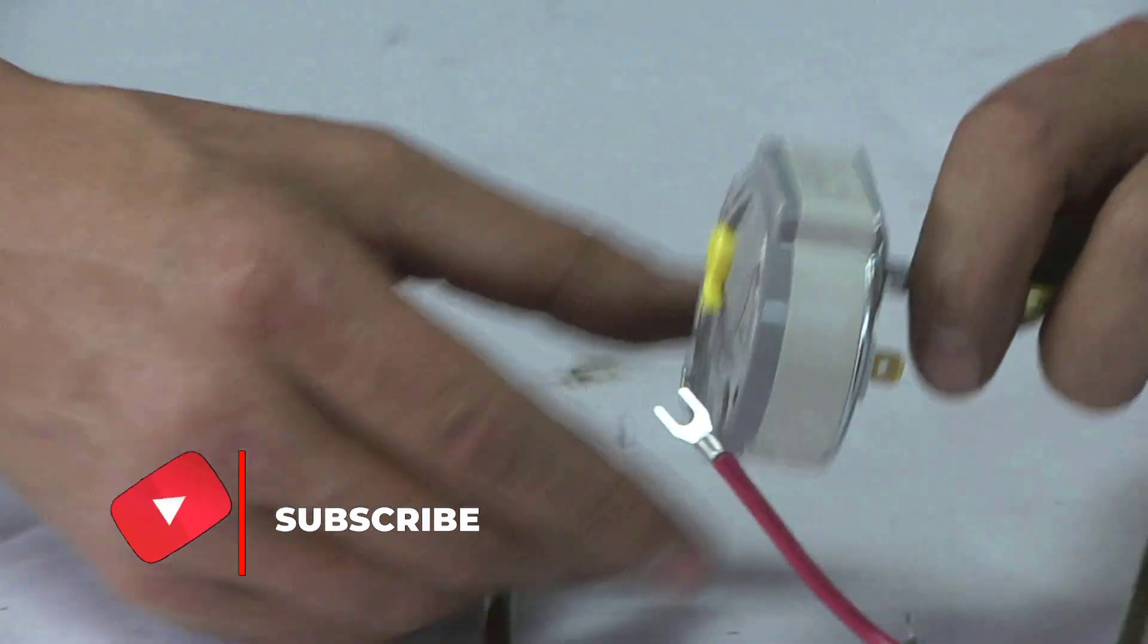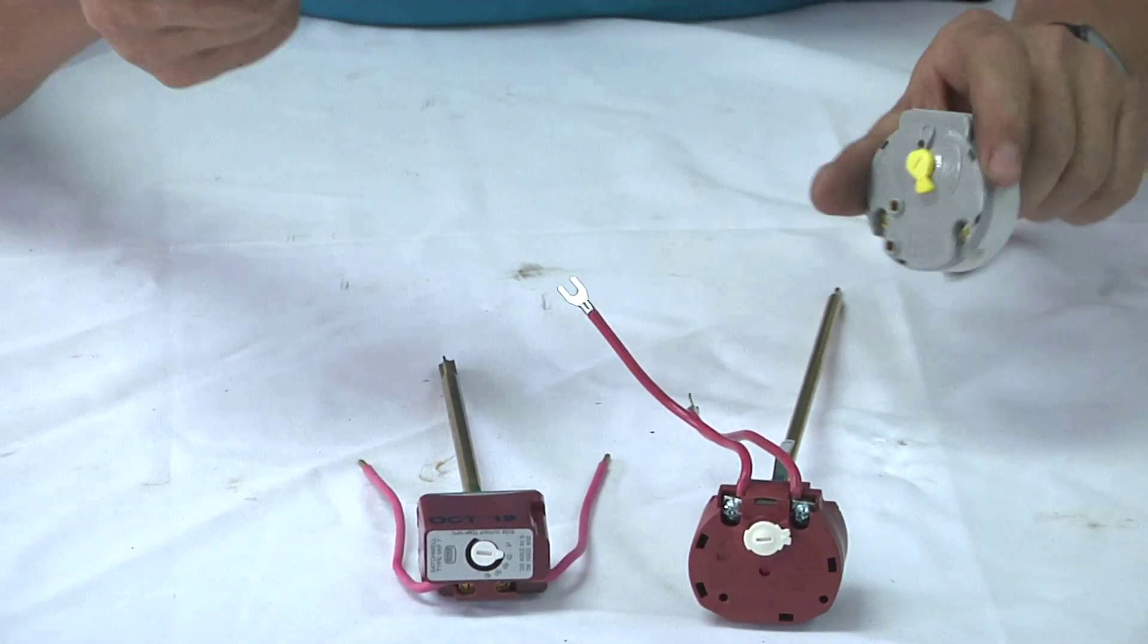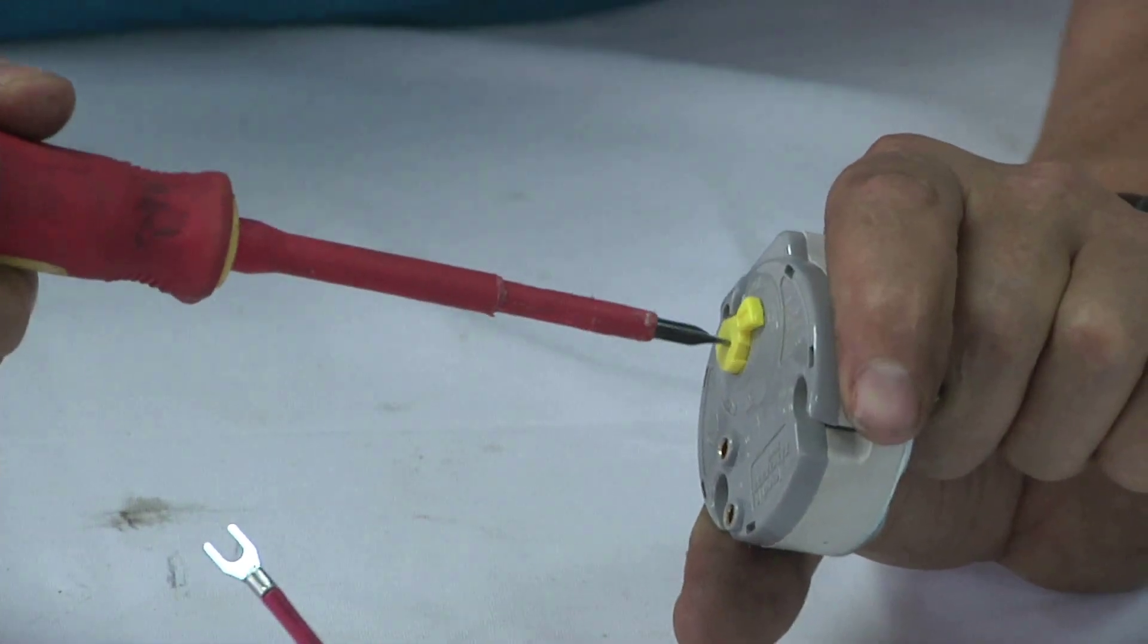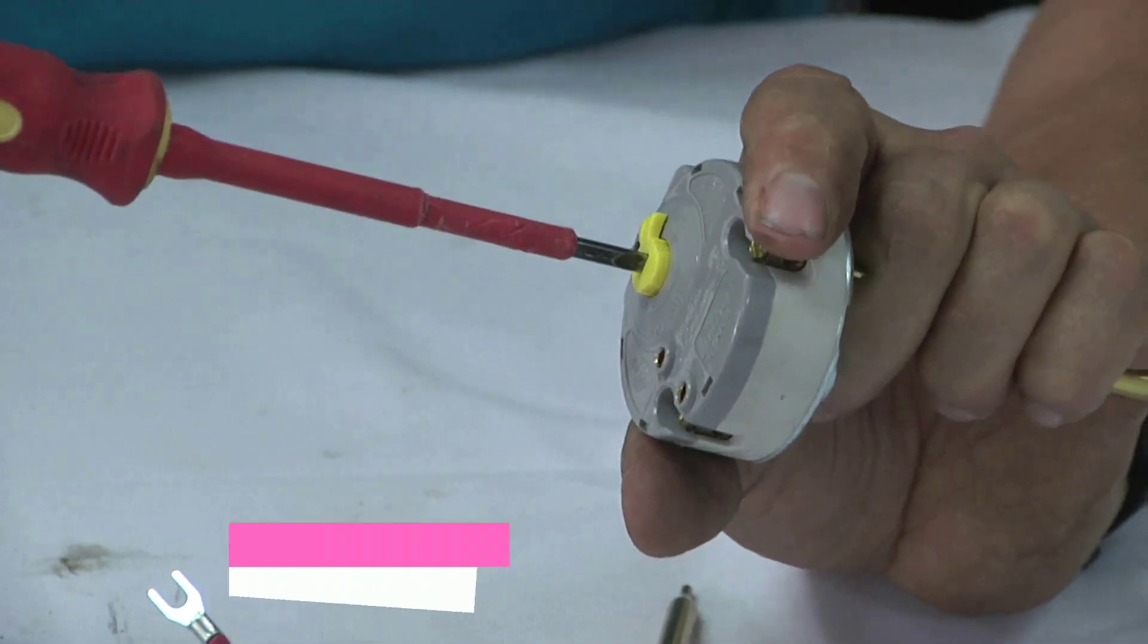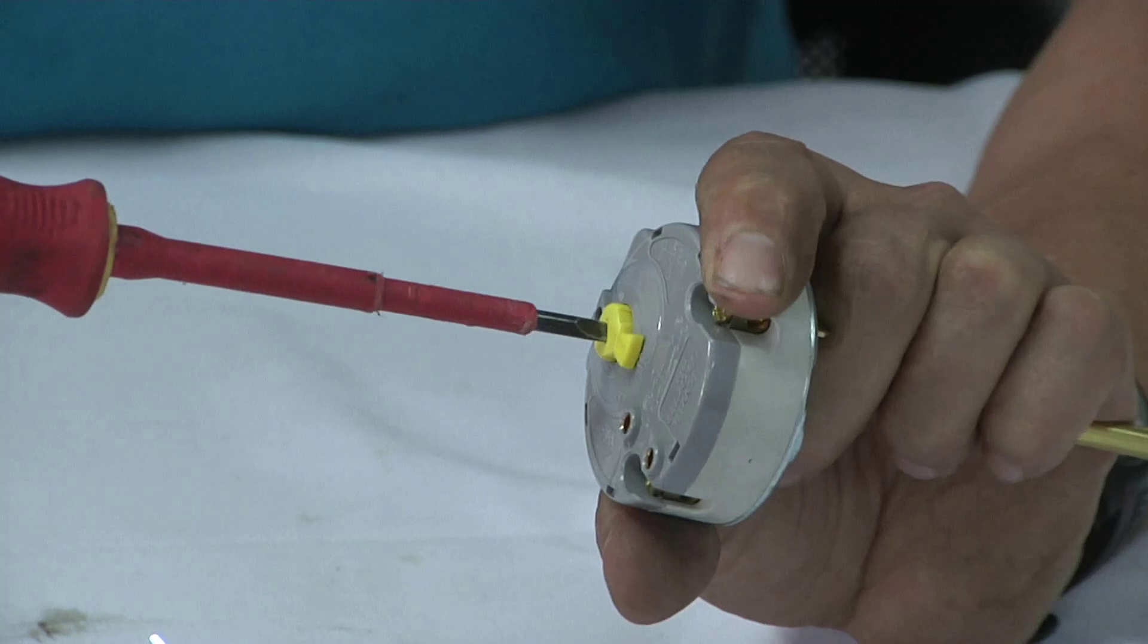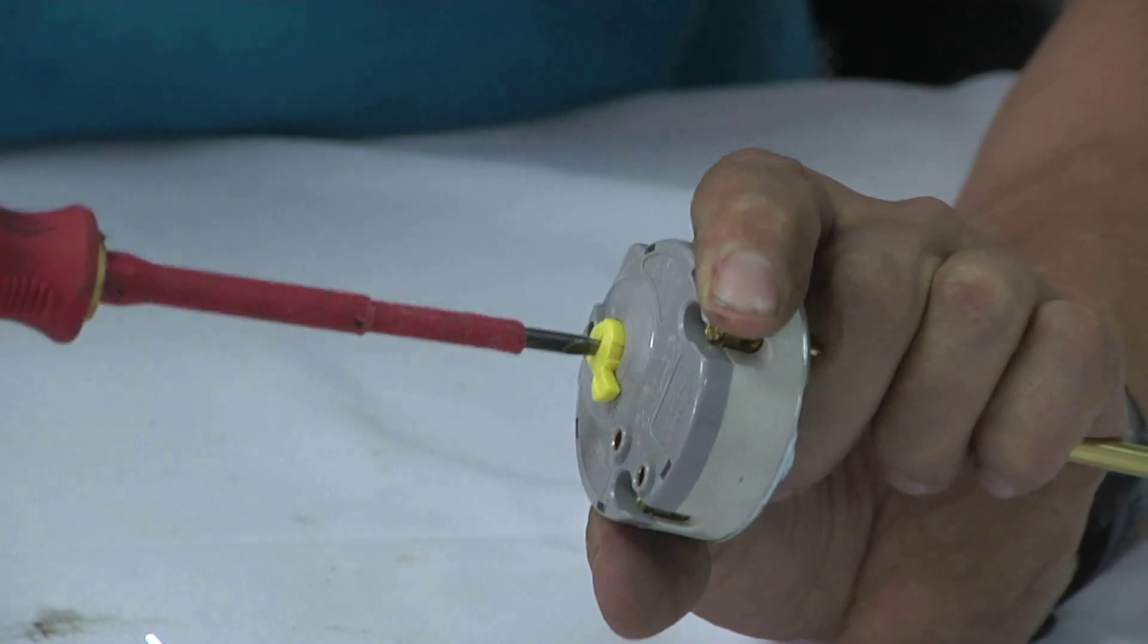You're going to take a flat point screwdriver once this is in your geyser, and you will see this yellow dial. You turn that anti-clockwise to decrease the heat. When you turn your thermostat, you hear a click that means the thermostat is switching off and on. You would turn that in between the 50 and 70, which is 60 degrees.